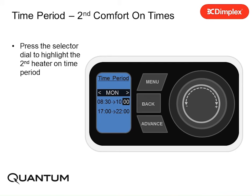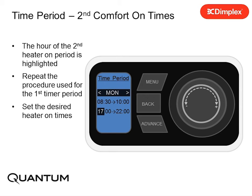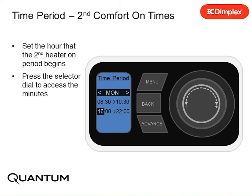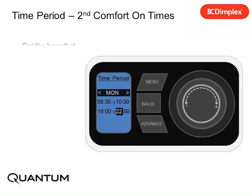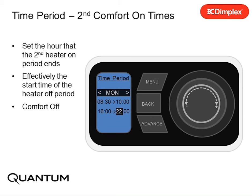Press the selector dial to highlight the second heater on time period. The hour of the second heater on period is highlighted. Repeat the procedure used for the first timer period and set the desired heater on times. Set the hour that the second heater on period begins, then press the selector dial to access the minutes. Set the minutes the second heater on period begins, and press the selector dial to access the heater off time. Set the hour that the second heater on period ends.